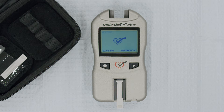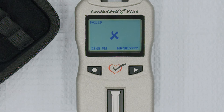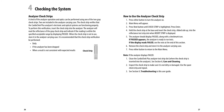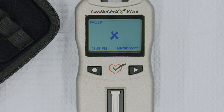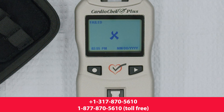Do not move the analyzer during testing. If the analyzer screen says Passed, good news — you're ready to run controls. If the analyzer says Failed, you'll want to make a few adjustments and try again. Please refer to Section 4 of your CardioCheck Plus Version 1.12 User Guide for details. If your check strip verification still fails after all troubleshooting measures have been taken, please do not use the analyzer. Call customer service for assistance.